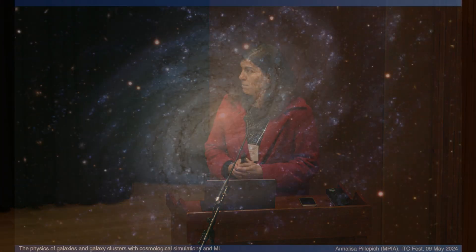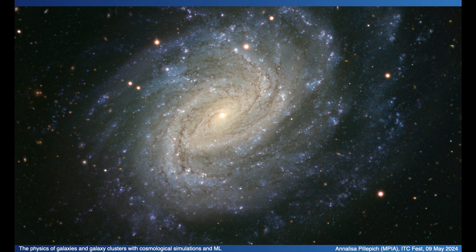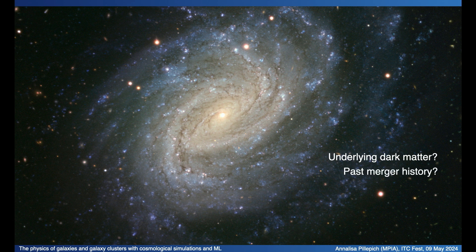We all know and love images like this one. By now, observers have collected tens of thousands of images like this, mostly at lower redshift, but progressively at larger and larger redshifts. But some questions remain unanswered. For example, what is the distribution and nature of the dark matter underlying this visible material? Or what is the past merger assembly history of this galaxy that otherwise looks quite relaxed? And if there were mergers and satellites, what are the stars and how many of them are accreted from these satellites and mergers compared to in-situ stars from within the galaxy itself?